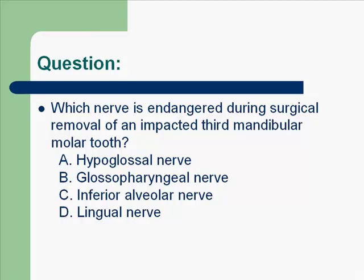Which nerve is endangered during surgical removal of an impacted third mandibular molar tooth? The correct answer is C, the inferior alveolar nerve. This nerve runs in the mandibular canal and is located near the roots of the teeth, so it might be endangered when removing an impacted tooth.